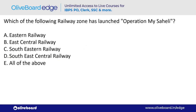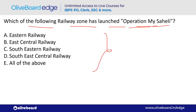Which railway zone launched 'Operation Meri Saheli'? The answer is South Eastern Railway — option C is the correct answer.